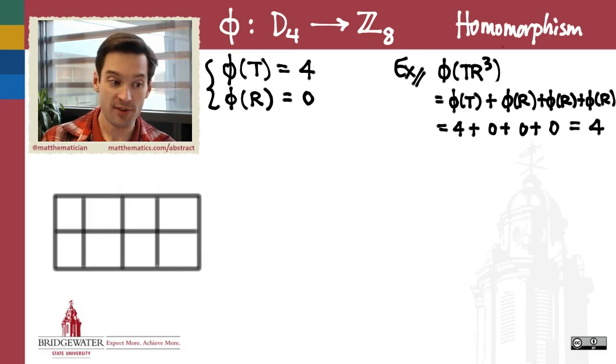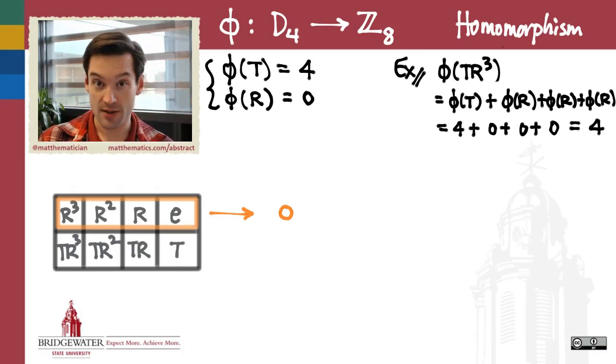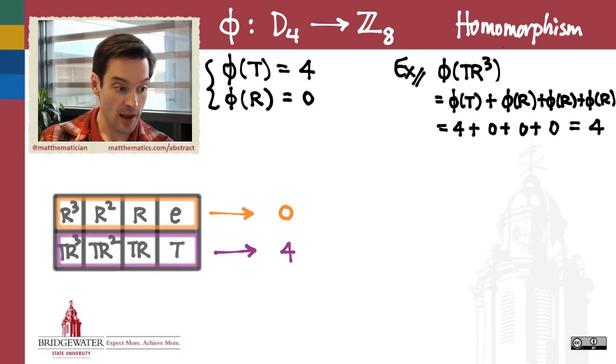That same process can be used to figure out where each of the eight elements in D₄ gets mapped by this function. All of e, r, r², and r³, so every power of that rotation of the square is getting sent to 0 by this function. And all of the reflections, t, tr, tr², tr³, those are all getting sent to the number 4 in ℤ mod 8. This is what this function φ is actually doing to the eight elements of the dihedral group of the square.